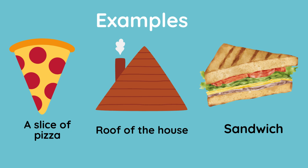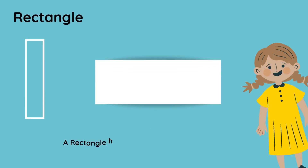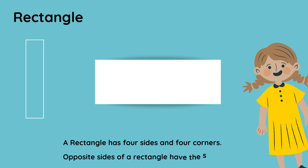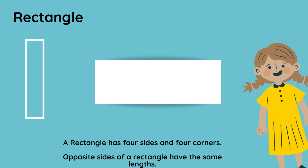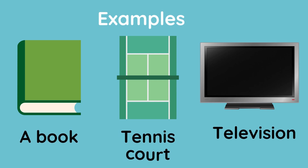Rectangle. A rectangle has four sides and four corners. Opposite sides of a rectangle have the same lengths. Here are some examples of rectangle-shaped objects: a book, tennis court, television.